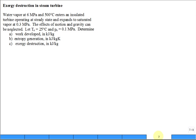We have water vapor at 6 MPa and 500 degrees C entering an insulated turbine. Let's put a box for the turbine with flow coming in and flow going out. The purpose of the turbine is to generate some power, so some W dot going out of the control volume.